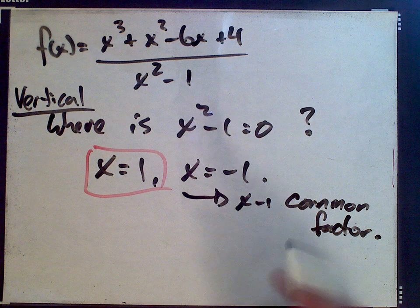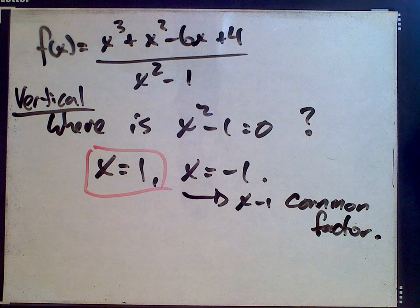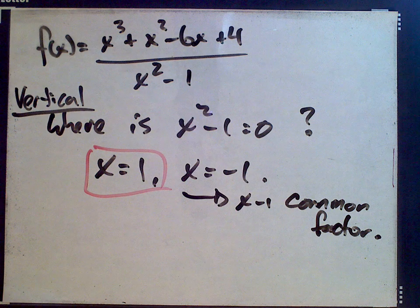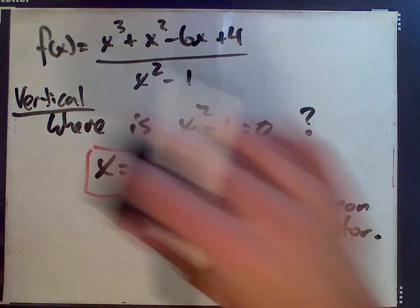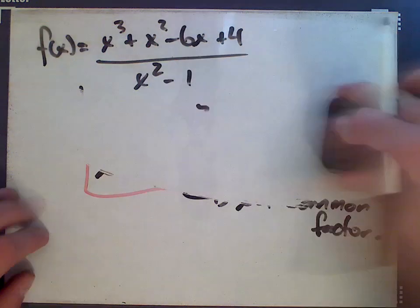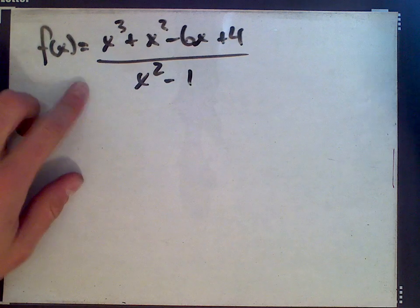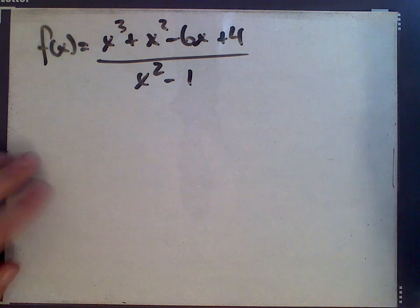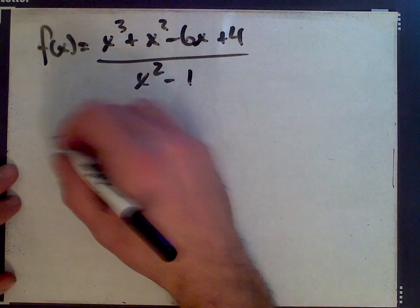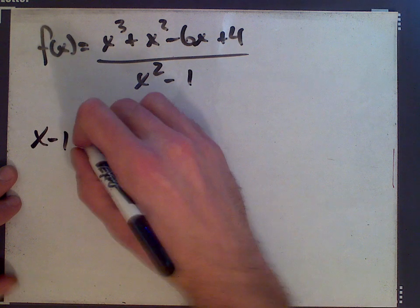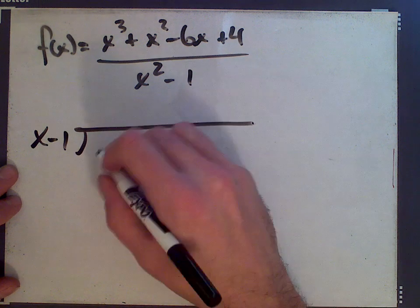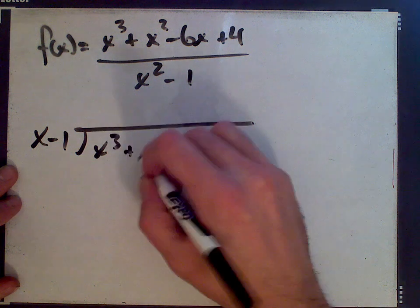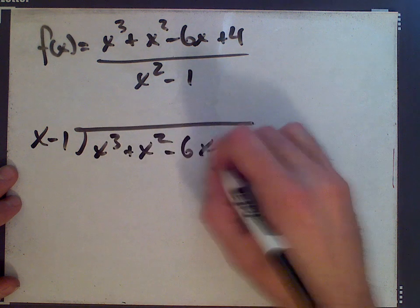Let me just take it a step further to show you. I'm going to factor the top. It's a cubic, so I'm going to use long division. Again, we know for sure that there's just going to be one vertical asymptote, but I'm going to show you why. So x minus 1 is the factor we want to divide out of x cubed plus x squared minus 6x plus 4.